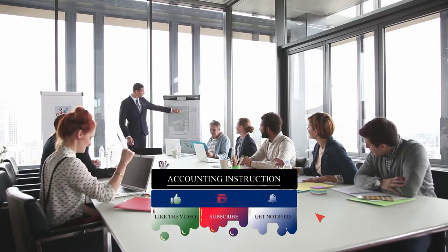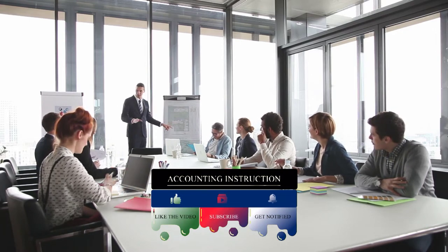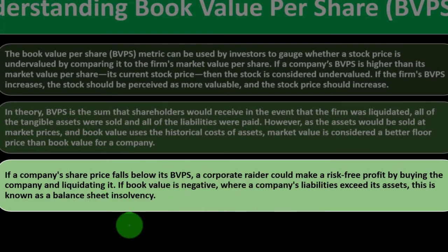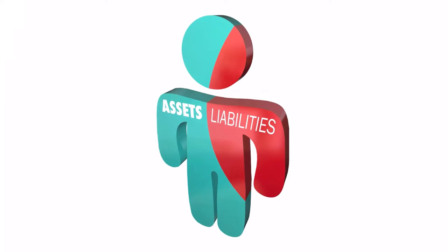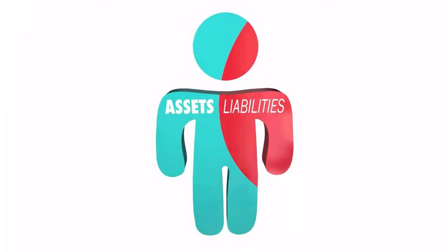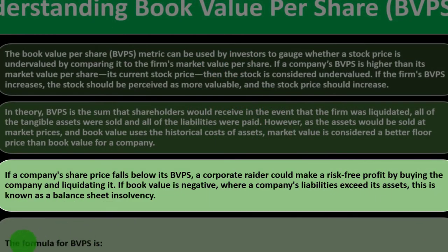The reason a company has those assets minus liabilities is to generate revenue. If they're efficient at doing that, you would expect the market price to be higher than the book value per share. If book value is negative — where a company's liabilities exceed its assets — this is known as balance sheet insolvency. If they owe more money than the assets they have, they won't be able to pay their debts and will be headed toward bankruptcy.